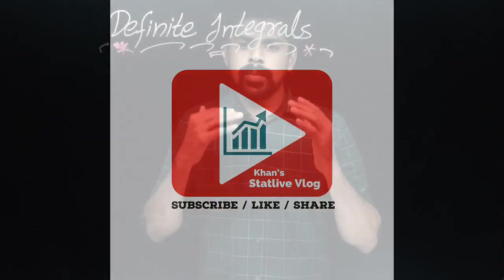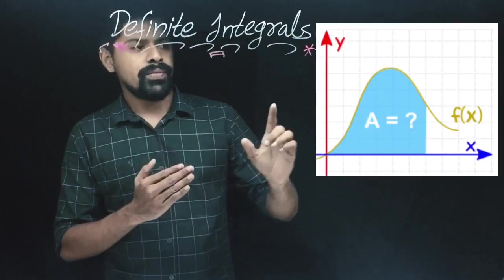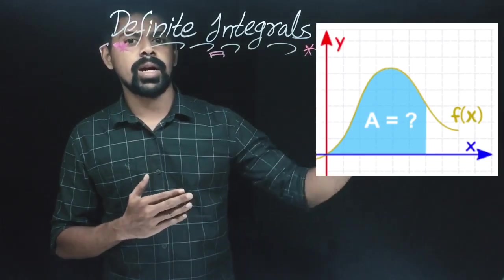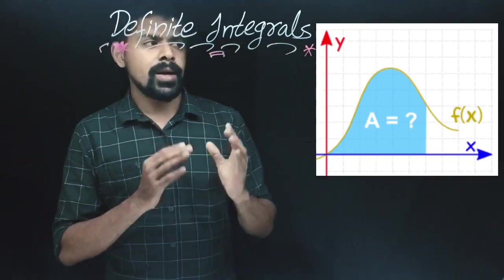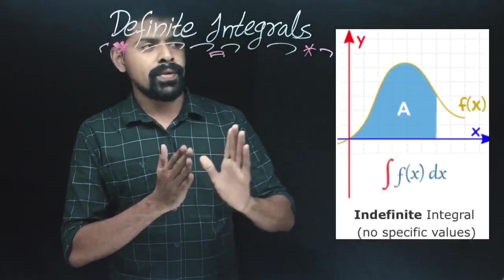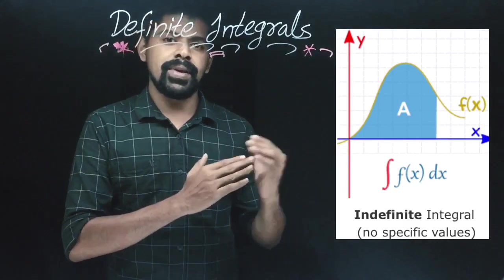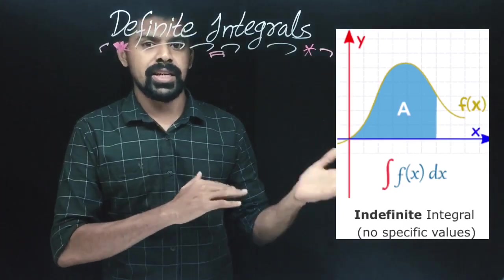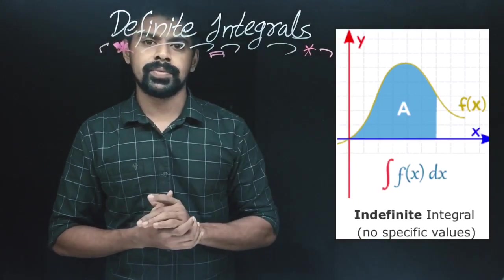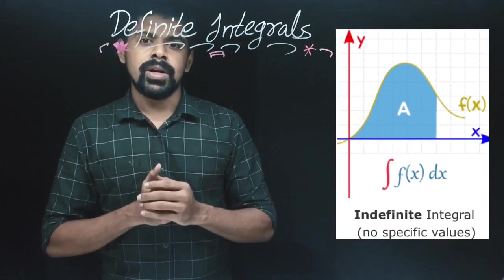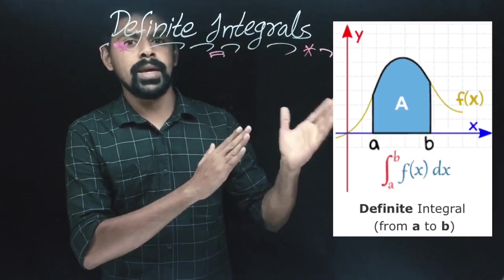For integration, there is a function and an area. In this shaded blue color region, there is integration. There is an interval for each function, and there is an indefinite integral. There is a specific value for each function. In this case, we will look at B as a boundary.